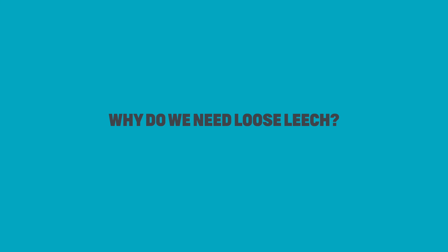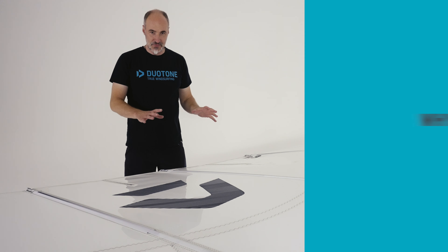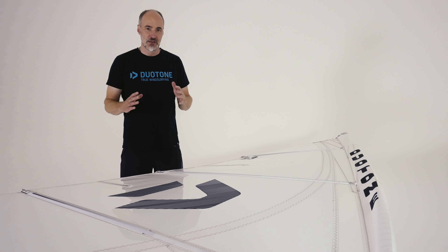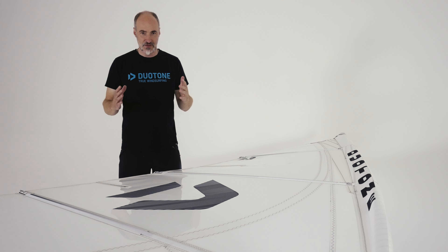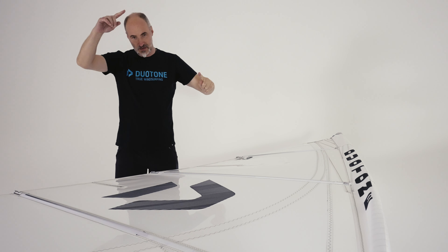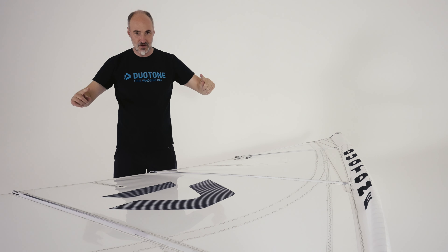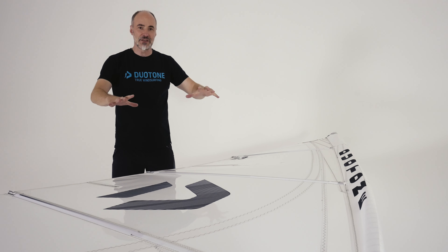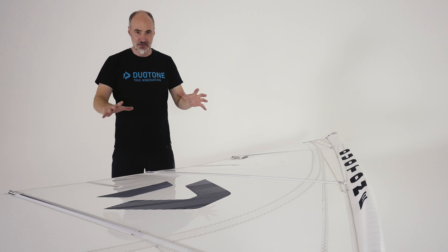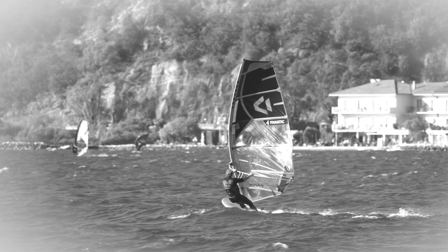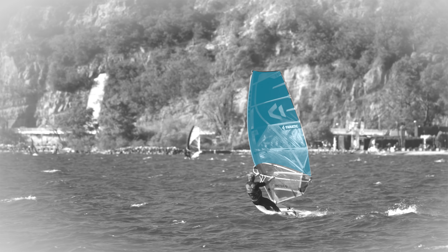Why do we need loose leach in a sail? There's a simple explanation. Contrary to a yachting boat where you have steel strings running from the top to the boat on your sail, here we have a dynamic entity. You hang on to your boom, and the rig is connected to your board.